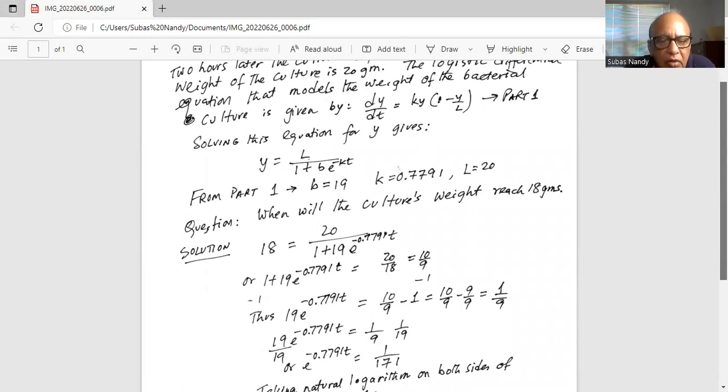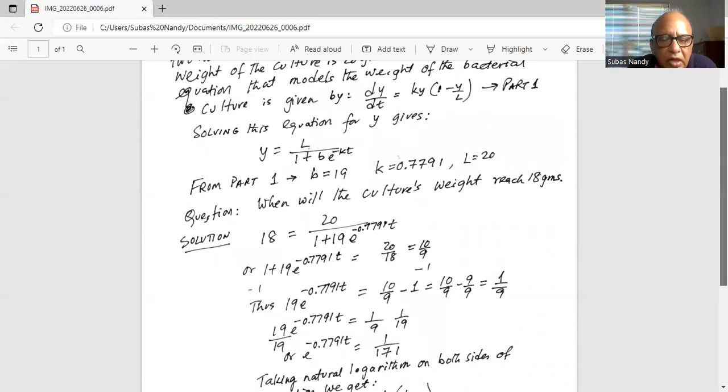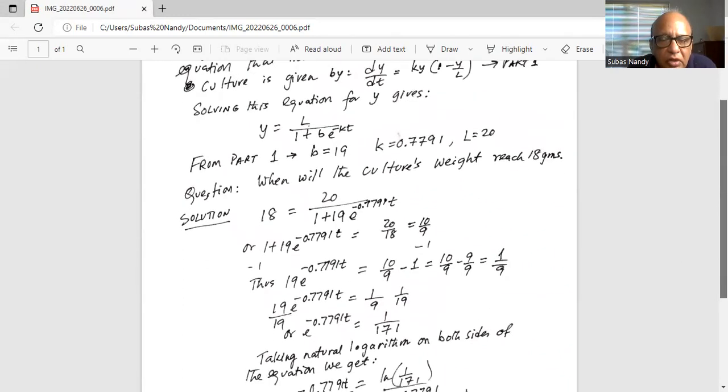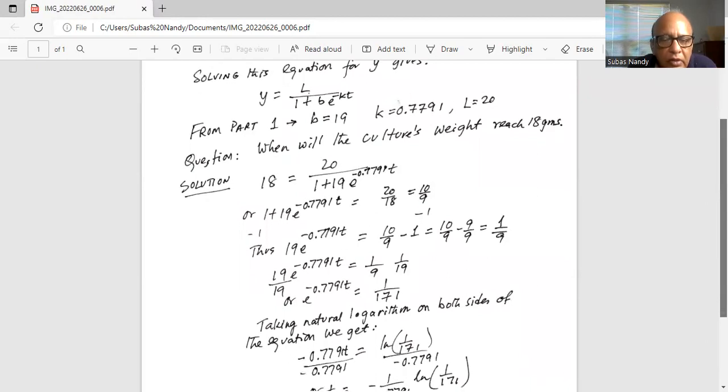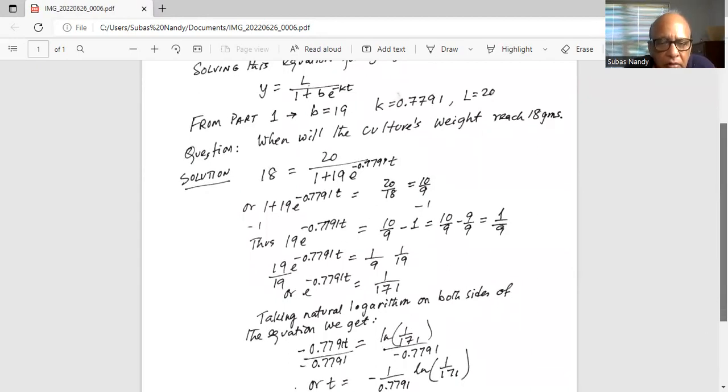Now we divide by 19 on both sides. We get natural number raised to the power of minus 0.7791t equals 1 over 171. Or we take the natural logarithm of both sides to get minus 0.7791 times t equals ln of 1 over 171.